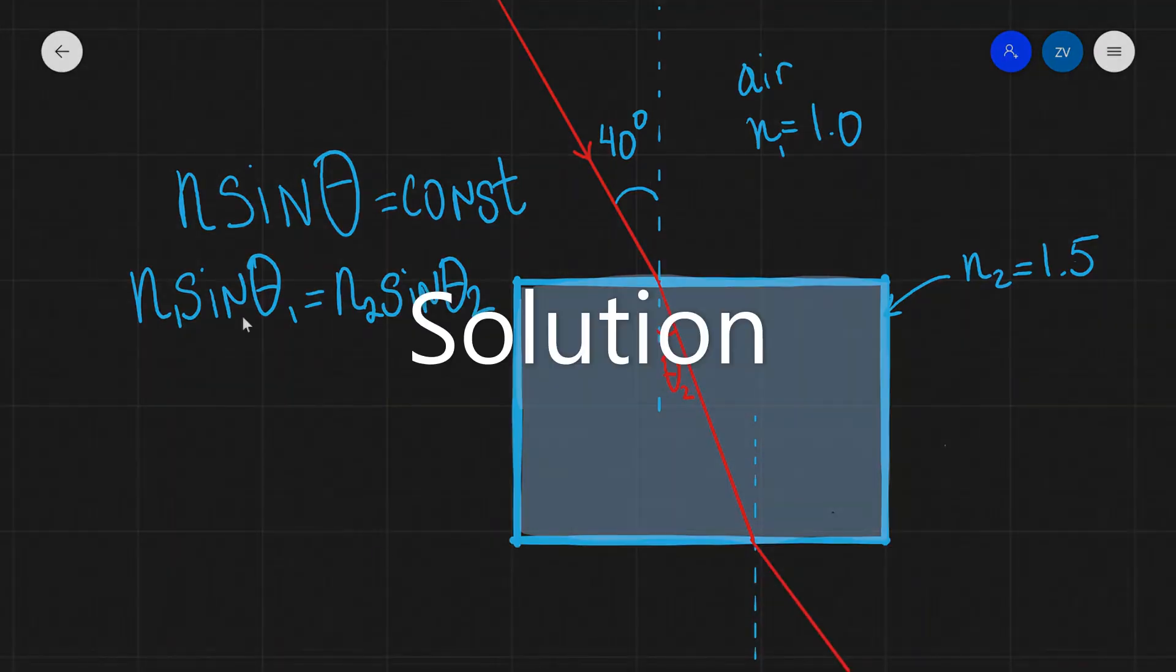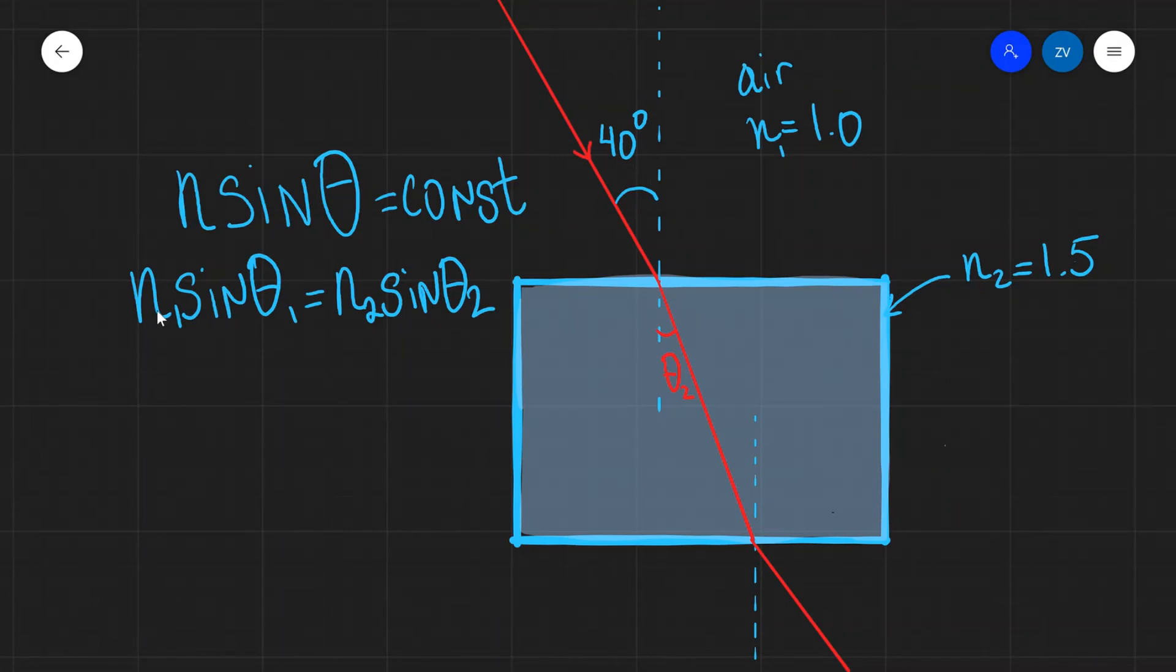Notice that in this equation, we know what N1 is, that is just equal to 1. We know what the angle of incidence is, this is equal to 40 degrees. We know what N2 is, this is 1.5. So all we need to do is rearrange for sine theta 2 and then for theta 2 as well. So let's start off by rearranging for the sine. So sine of the angle of refraction will be equal to N1 sine theta 1 divided by N2.